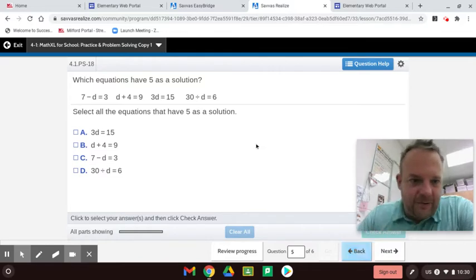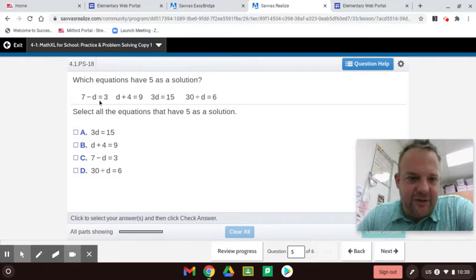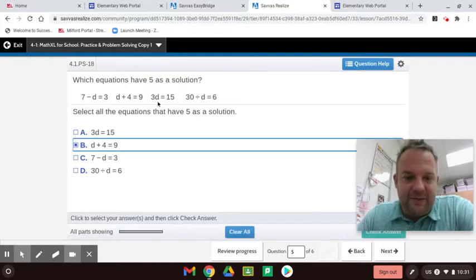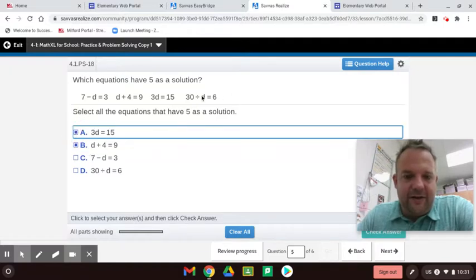So which equations have 5 as a solution? We're going to test it out. 7 minus 5 is 2, so not that one. 5 plus 4 is 9, so yeah, that one is one of them. 3 times 5 is 15. Yep, that's one of them. And 30 divided by 5 is 6, so that is one of them too.